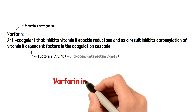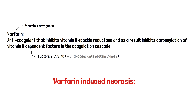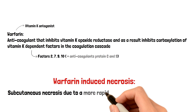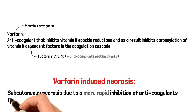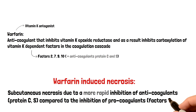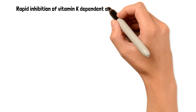Now let's talk about this complication — necrosis. Warfarin affects factors 2, 7, 9, and 10, but also anticoagulant proteins C and S. Subcutaneous necrosis happens because of the more rapid inhibition of anticoagulant proteins C and S compared to the inhibition of procoagulants, which are factors 2, 7, 9, and 10. So it's a timeline thing.